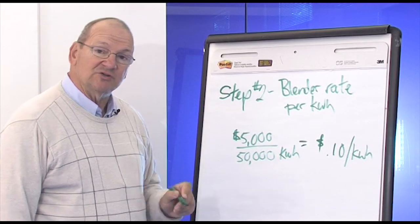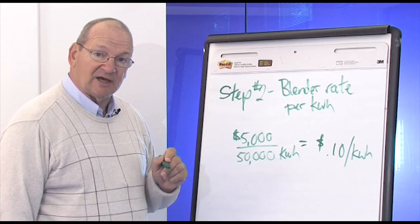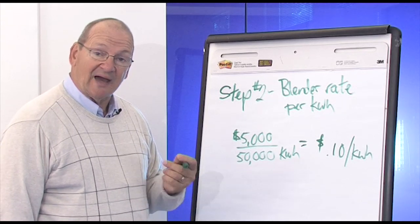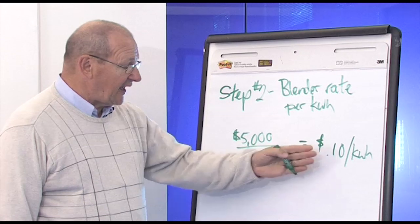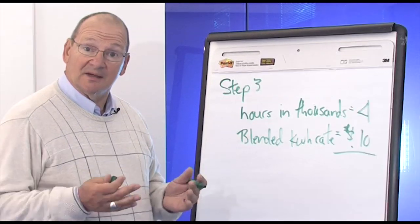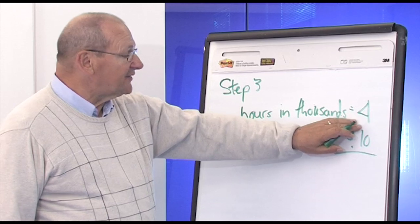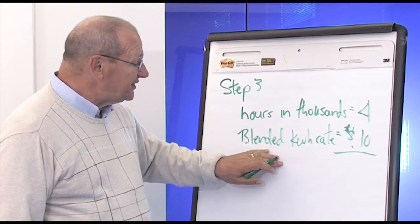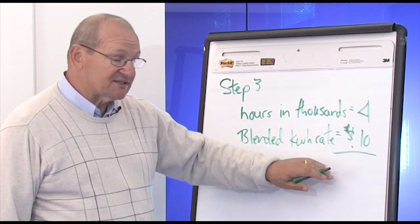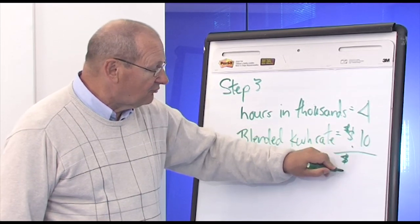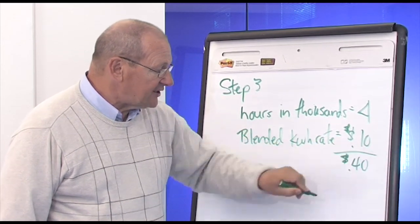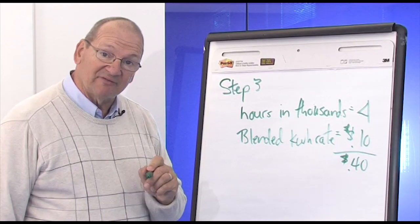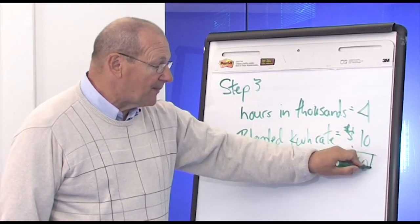Now you have the two elements you need to calculate the value of 1 watt: the hours in units of 1,000, and the blended kilowatt hour rate. Now, multiply the hours in thousands, 4, times the blended kilowatt hour rate, 10 cents, or 40 cents, and you have the value of 1 watt of energy saved or spent per year.